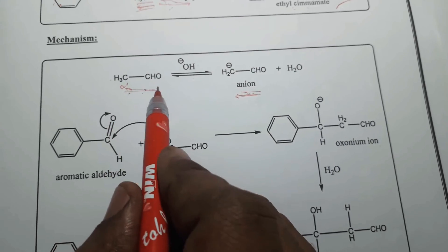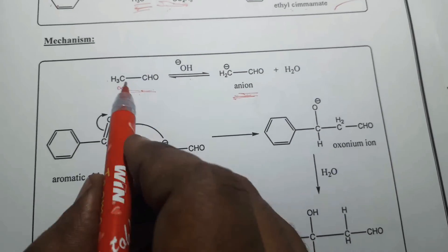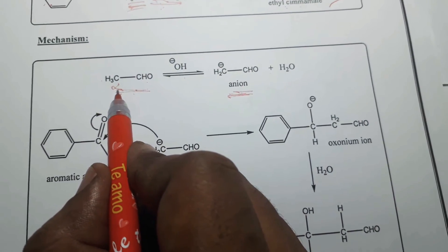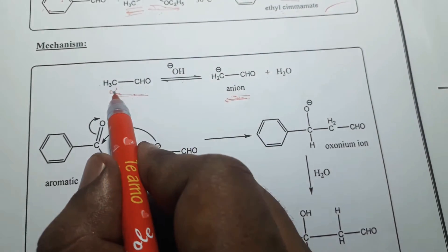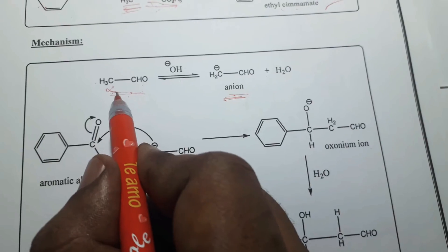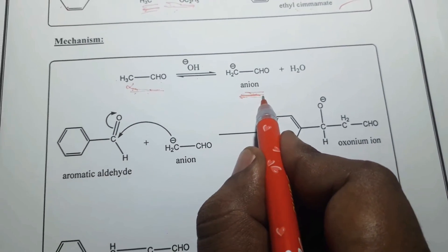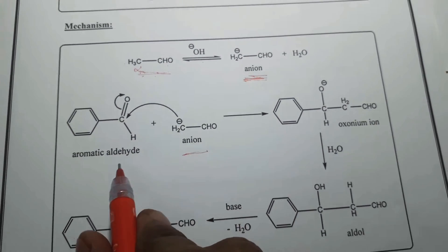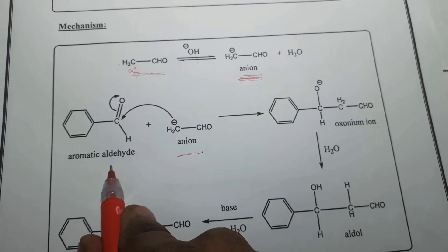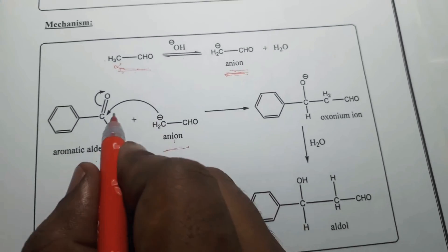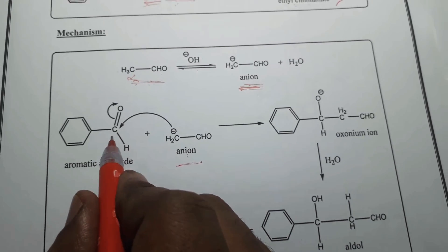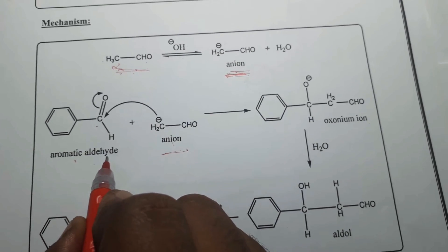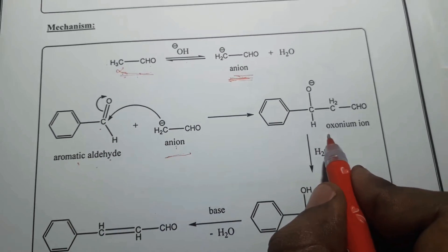Here the aliphatic aldehyde compound acetaldehyde is used. Acetaldehyde consists of alpha-hydrogens. In the presence of a base, it abstracts the proton from the alpha-carbon atom, producing the respective anion. Further, this anion reacts with the aromatic aldehyde — the anion attacks the carbonyl carbon of the aromatic aldehyde, leading to produce an oxonium ion.